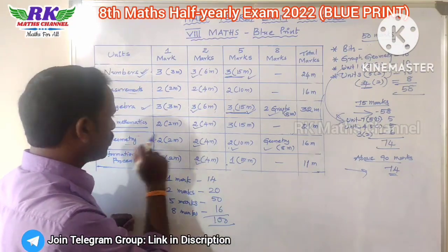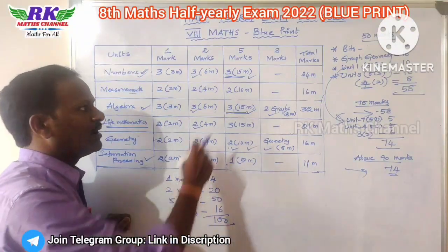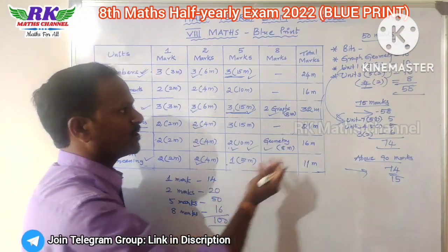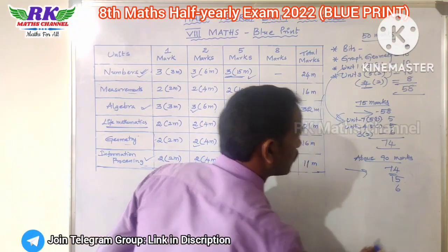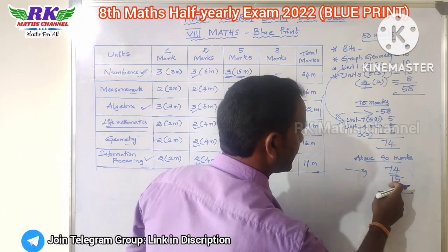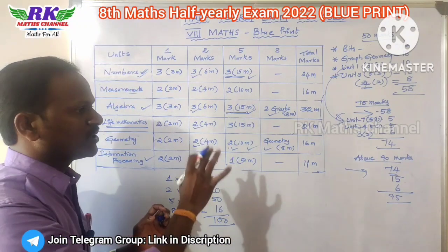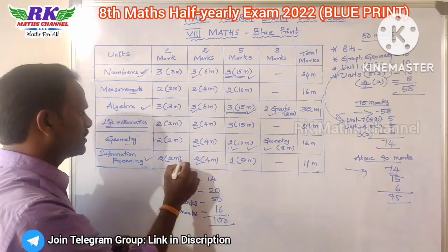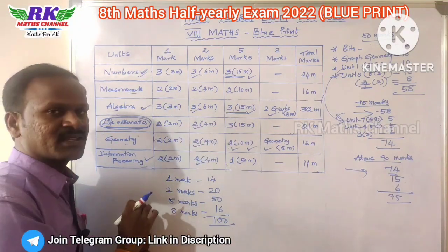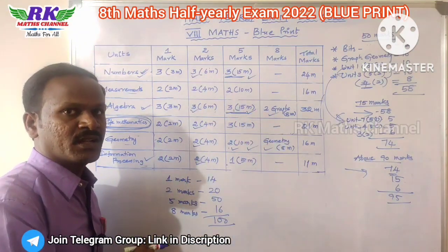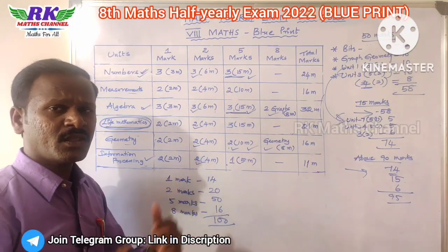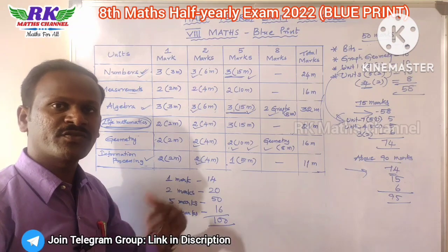You have to do 5 mark questions of the next type to confirm 1 mark. If you write all 100 marks of questions, you can confirm good marks. You can try to find out — life mathematics is a little difficult compared to other topics, but you can manage it. If you find the video useful, please like, subscribe, share with friends. Thank you.